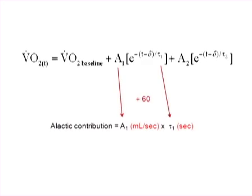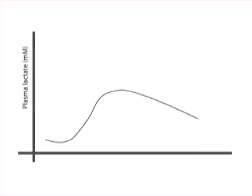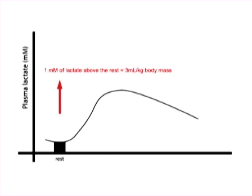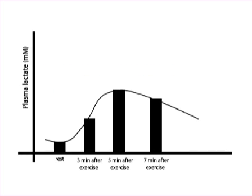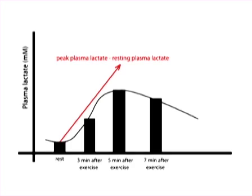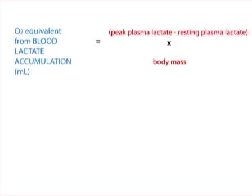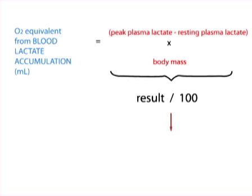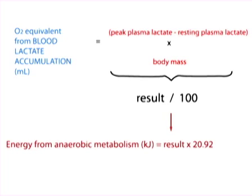Amplitude A1 has to be divided by 60 so the unit milliliters per minute is converted to milliliters per second. To calculate the contribution of the lactic anaerobic metabolism, we assume that one millimole of lactate above resting values corresponds to 3 milliliters of oxygen consumed per kilogram of body mass. Thus, the delta peak plasma lactate — that is, peak plasma lactate minus resting plasma lactate — is multiplied by 3 and by the athlete's body mass. The result in milliliters is then converted to liters and to energy, assuming that each liter of oxygen equals 20.92 kilojoules.